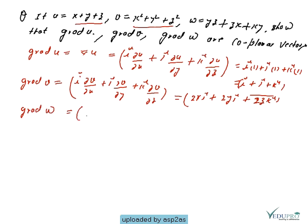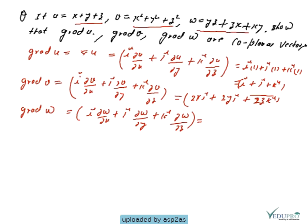Similarly, grad w = i(∂w/∂x) + j(∂w/∂y) + k(∂w/∂z). Since w = yz+zx+xy, the partial derivatives are (z+y), (z+x), and (y+x) respectively. So grad w = (z+y)i + (z+x)j + (y+x)k.